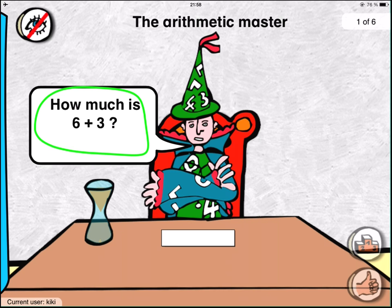This is the problem that the Arithmetic Master gives you. He also tells you what he wants to know. You can solve the problem until the sand in the hourglass is running out. Enter the solution as fast as possible and click on the thumb.